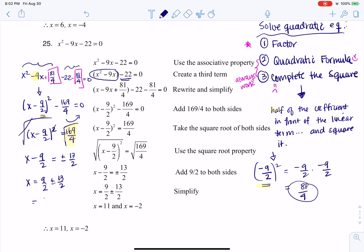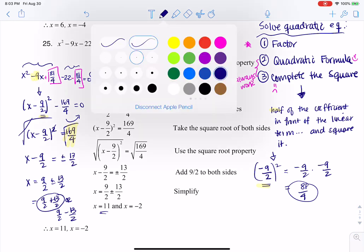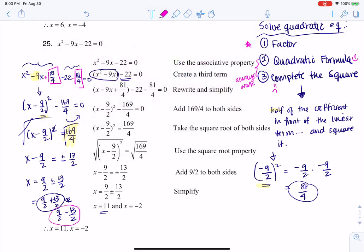And then I add the 9 halves over. So I get 9 halves plus or minus 13 halves. Which means we get 9 halves plus 13 halves, or 9 halves minus 13 halves. And when you do 9 halves plus 13 halves, 9 plus 13 is 22. 22 divided by 2 is 11. When I look at this second set here, when I do 9 halves minus 13 halves, I have 9 minus 13 is negative 4. Negative 4 over 2 is negative 2.